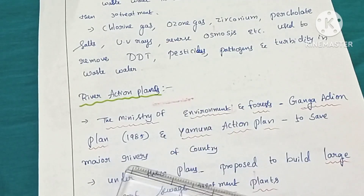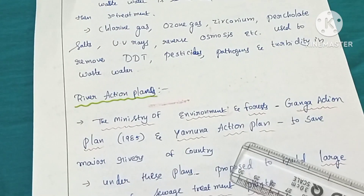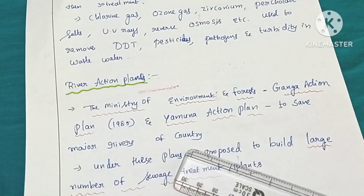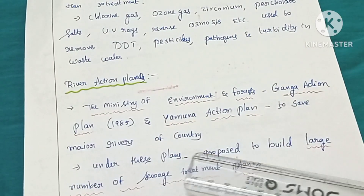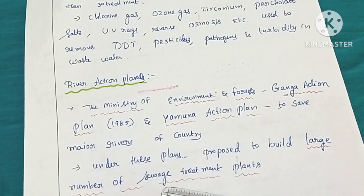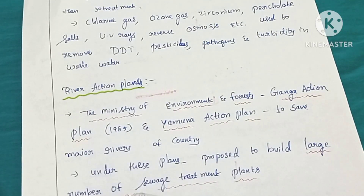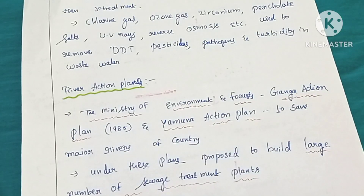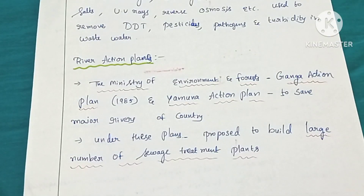Next are river action plans. These were introduced by the Ministry of Environment and Forest. Under these plans, the Ganga Action Plan and Yamuna Action Plan were initiated in 1985. Under these plans, a large number of sewage treatment plants were proposed to be built and constructed. This concludes the topic of sewage treatment.